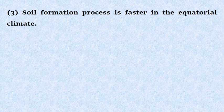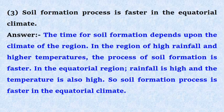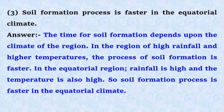Third, soil formation process is faster in the equatorial climate. Answer: The time for soil formation depends upon the climate of the region. In regions of high rainfall and higher temperature, the process of soil formation is faster. In the equatorial region, rainfall is high and the temperature is also high. So, soil formation process is faster in the equatorial climate.